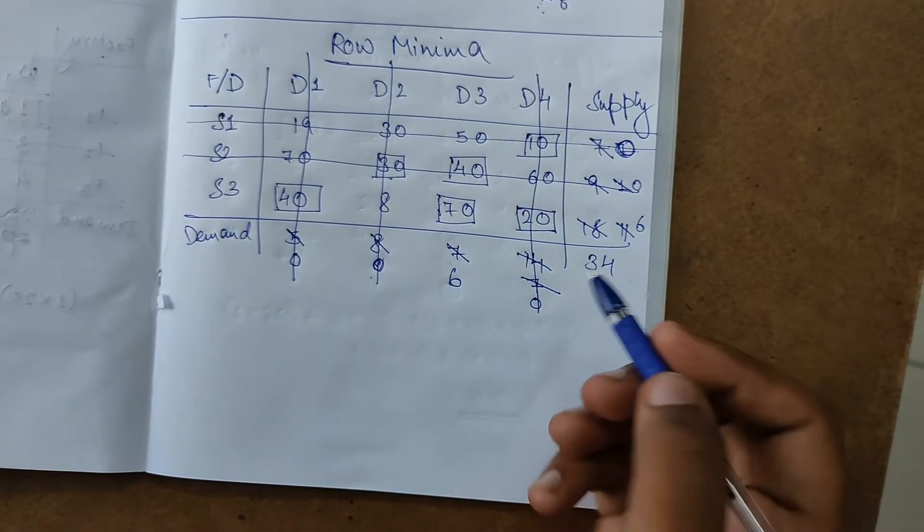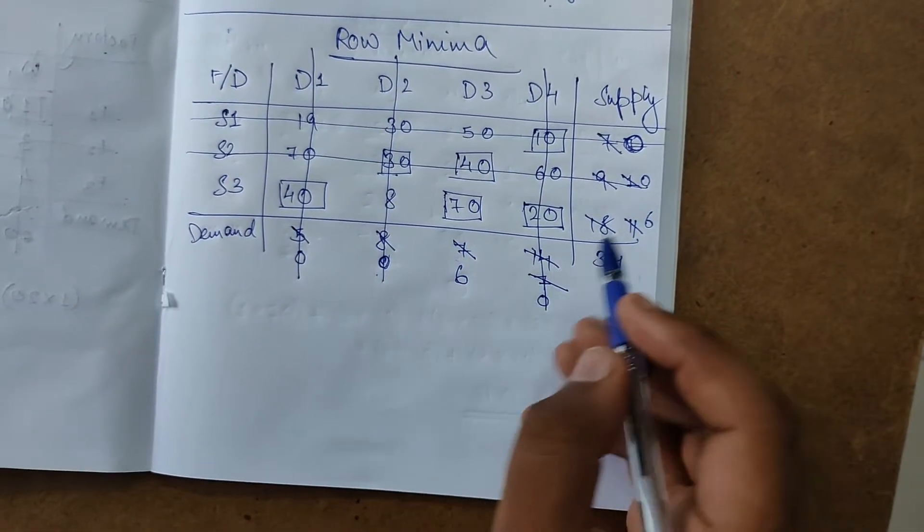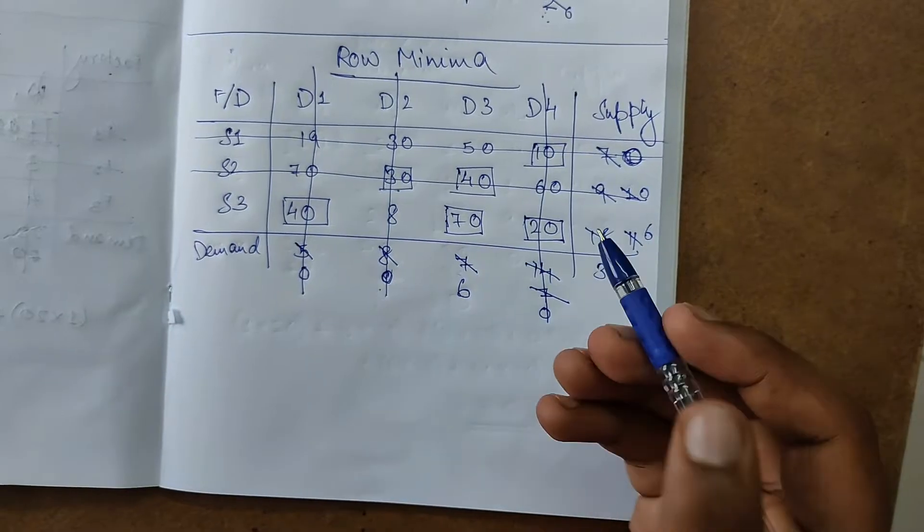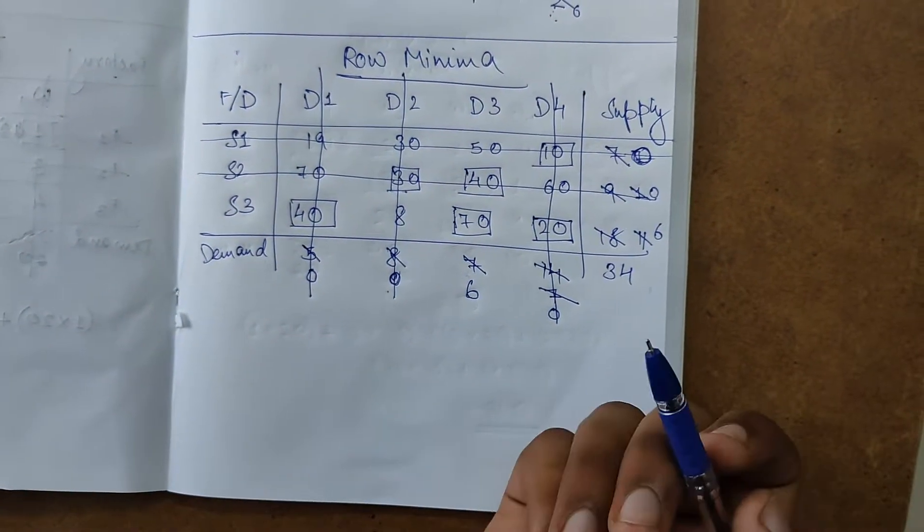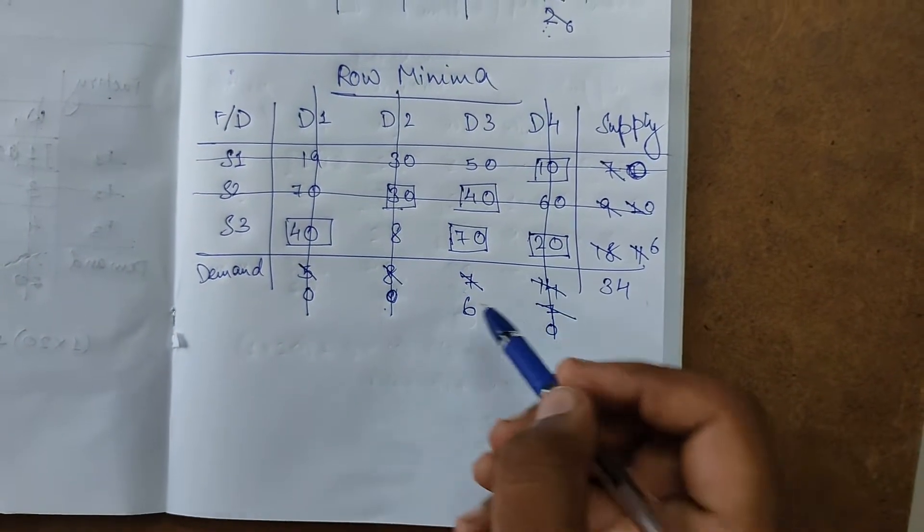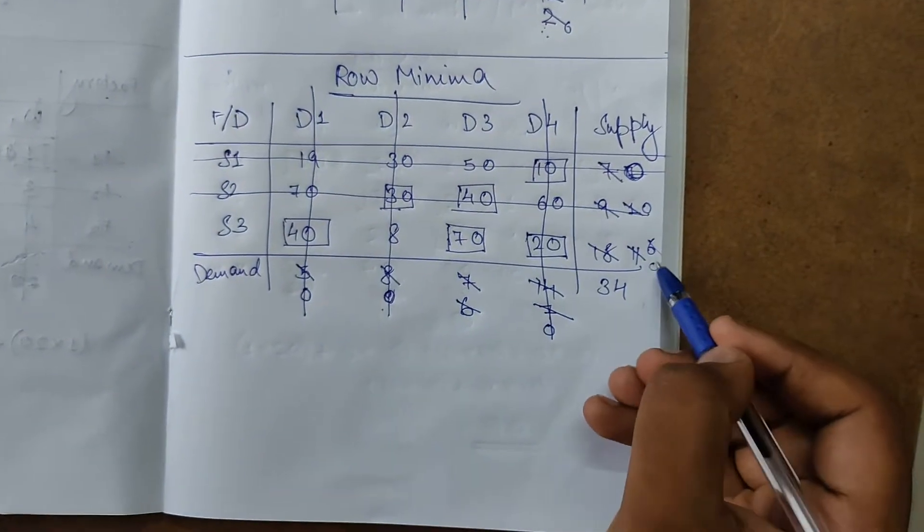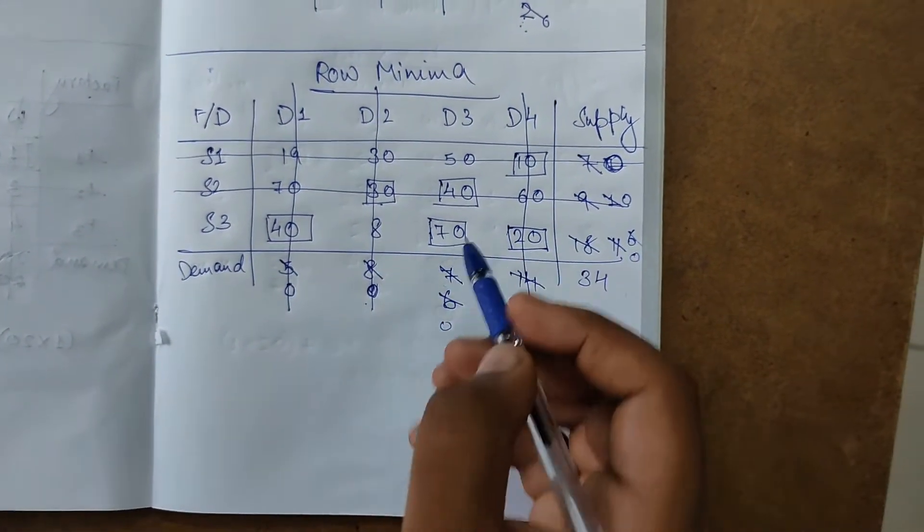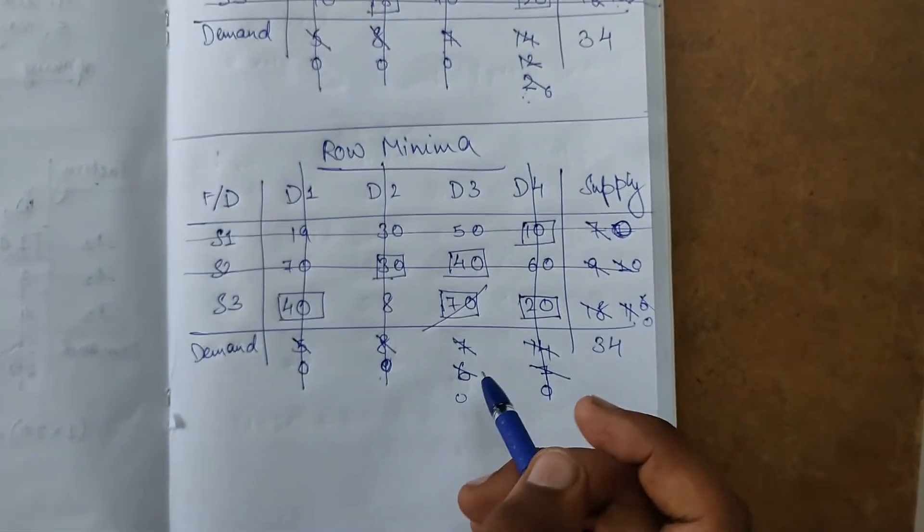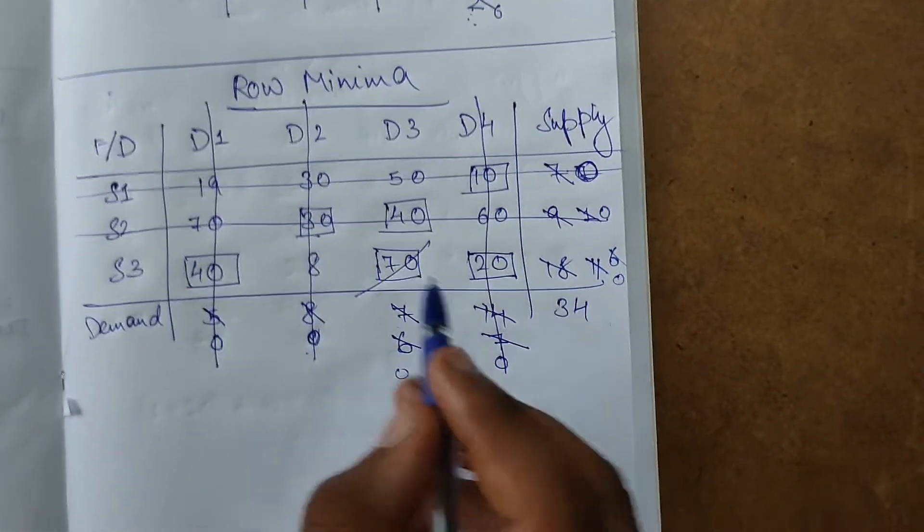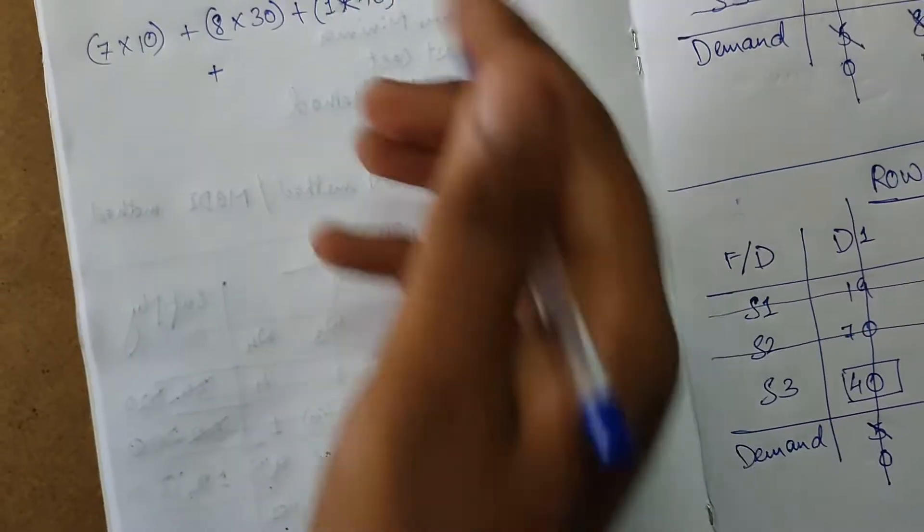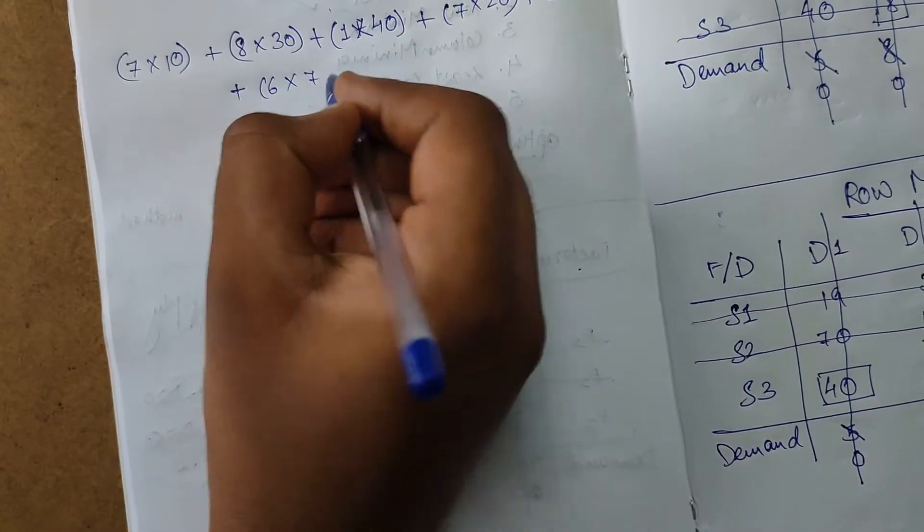Finally left with one unit, 70. Highlight 70. Demand is 6, supply is 6, showing this was a balanced problem. Strike off 6 and 6, becomes 0 and 0. Cross this element. Subtracted 6, so 70 into 6, we will add then.